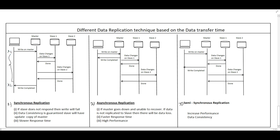The total time duration from T1 to T2 means synchronous replication has a slower response time. If the master can write to slave 1 but slave 2 is down, the write will not complete and it will return an error — unable to process the write. This is a potential issue with synchronous replication.